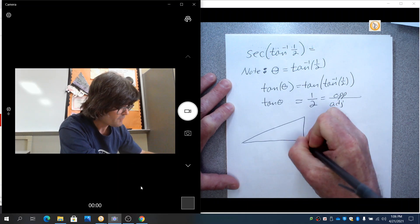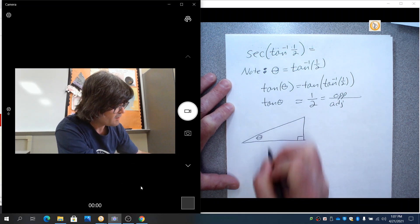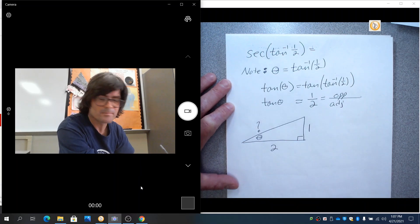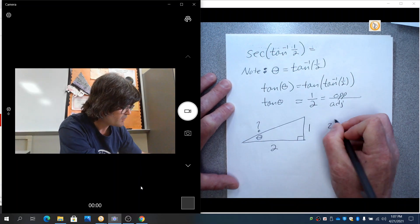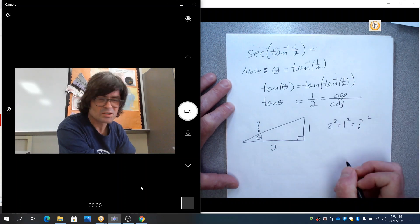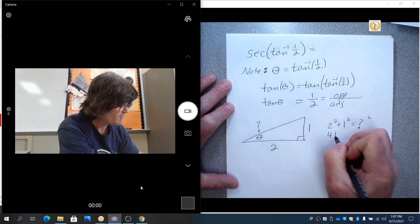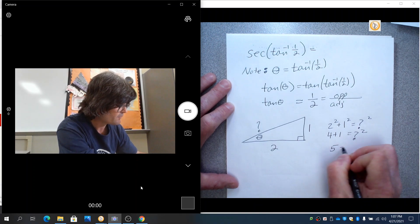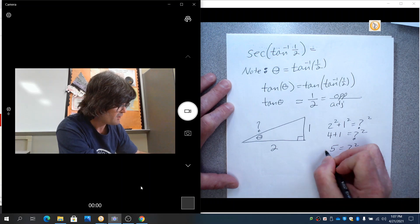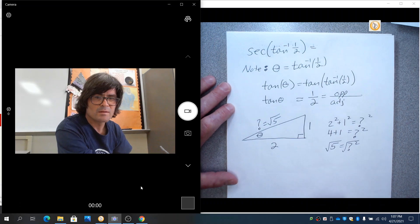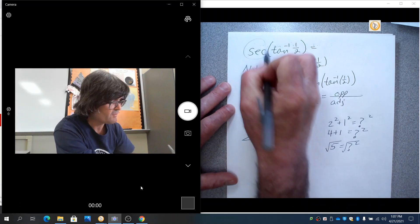You just have tangent equals one half. Tangent is opposite over adjacent. So draw your triangle. I'll put theta here. Opposite is one. Adjacent is two. Question mark is there. Two squared plus one squared equals question mark squared. So four plus one equals question mark squared. That's five. Pick your square root on both sides. And this is the square root of five.